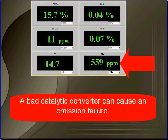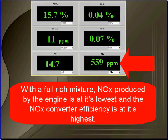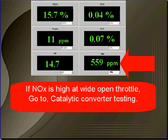A bad catalytic converter can cause emission failures. Measure the NOx during wide open throttle operation — you're at full rich condition then. With a full rich mixture, the NOx produced by the engine is at its lowest and the NOx converter efficiency is at its highest. So if NOx is high at wide open throttle, go to catalytic converter testing.